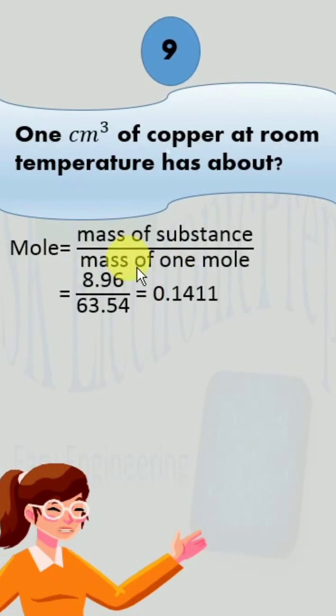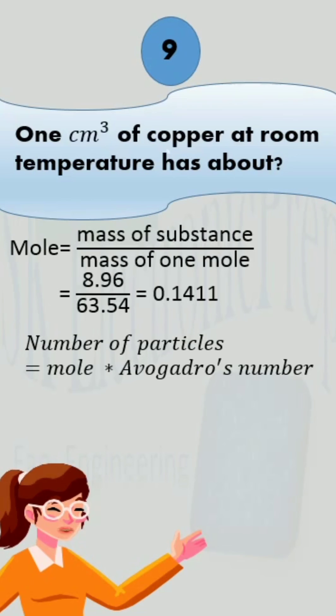For moles, we have formula. Moles is equal to mass of substance over mass of one mole. Put the values we get 0.1411.